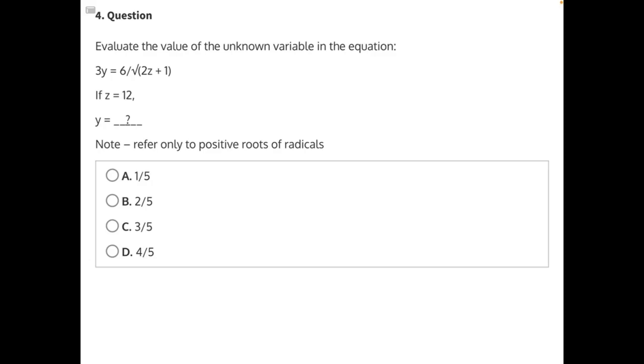Evaluate the value of the unknown variable in the equation. Let's start by substituting in our known variable, z equals 12. So we have 3y equals 6 over a denominator.